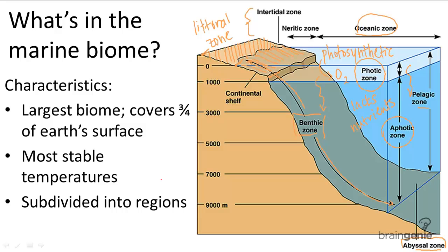As a quick summary: the marine biome is the largest biome, has the most stable temperatures, and is subdivided into regions based on sunlight, distance from land, and water depth.